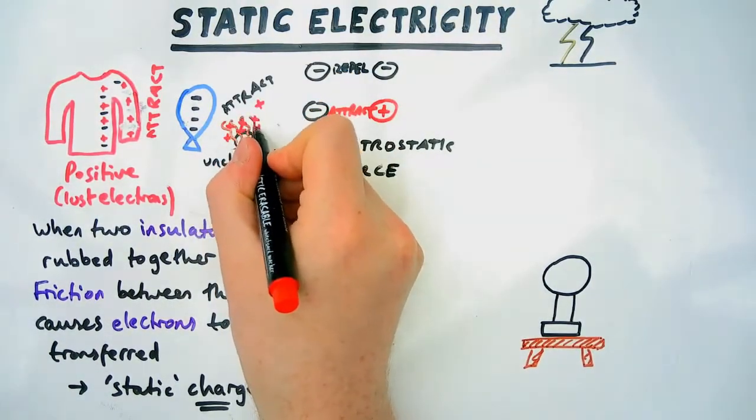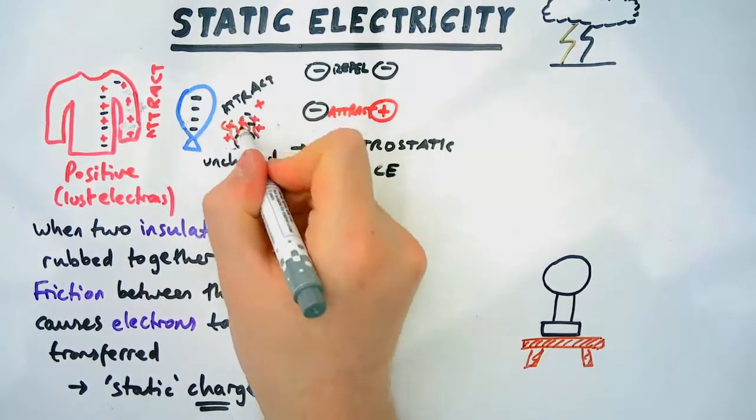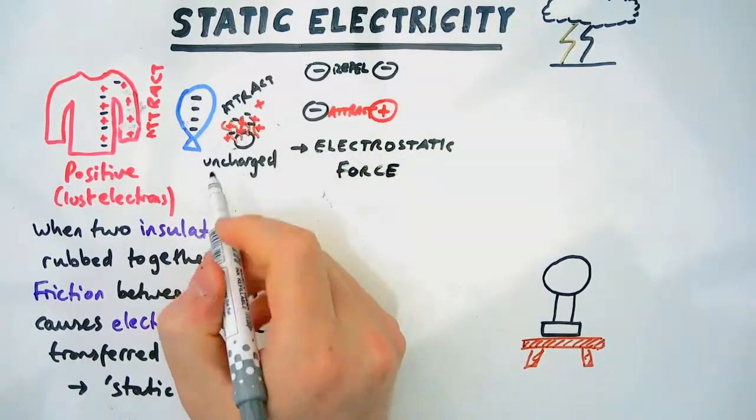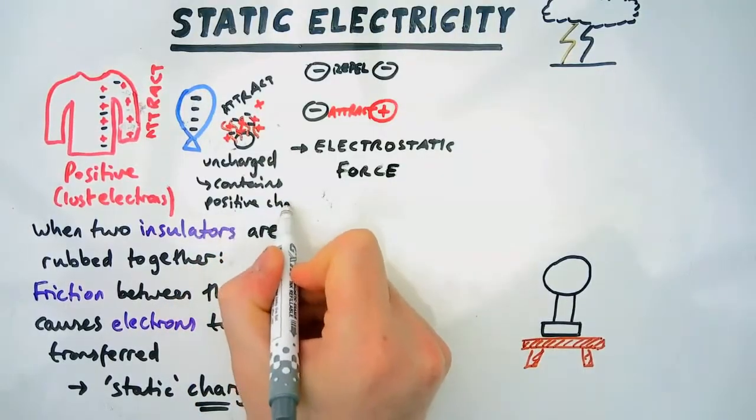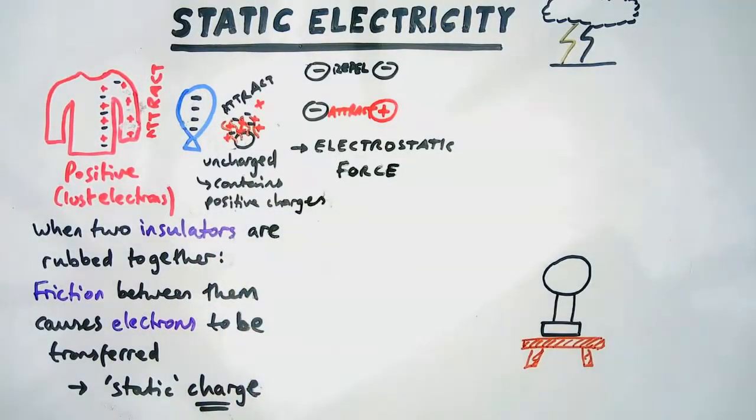So there are positive and negative charges, but because it's light enough, the balloon will attract the positive charges in the uncharged object, meaning that it will attract that neutral object. It can be any neutral object, not just hair.